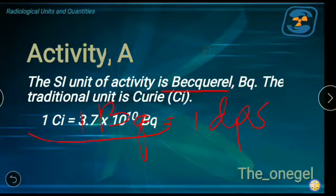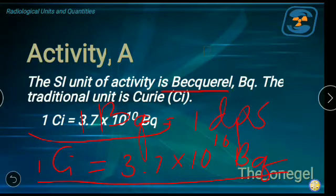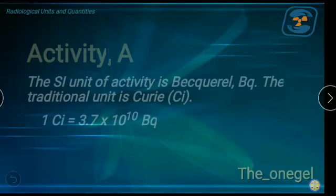For one Curie, capital letter C, small letter I, there are 3.7 times 10 raised to 10 Becquerel. This is now our conversion factor. In other words, we can now convert the traditional into SI or SI into traditional using this conversion factor.